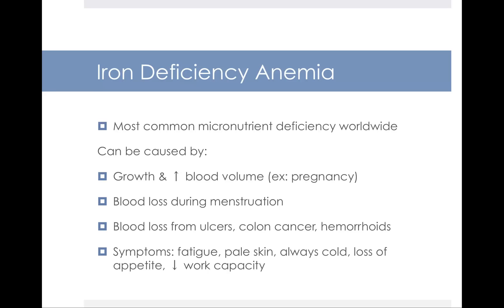Iron deficiency anemia is the most common micronutrient deficiency experienced worldwide. It can be caused by, for example, pregnancy. During pregnancy, the volume of a pregnant woman's blood increases by 50%, and she oftentimes experiences iron deficiency anemia related to pregnancy. Women who lose a lot of blood during menstruation can increase their risk of anemia, or if you lose blood from ulcers, things like colon cancer, or hemorrhoids.